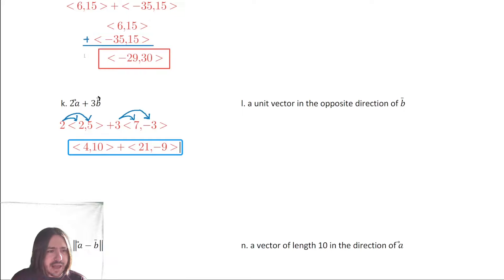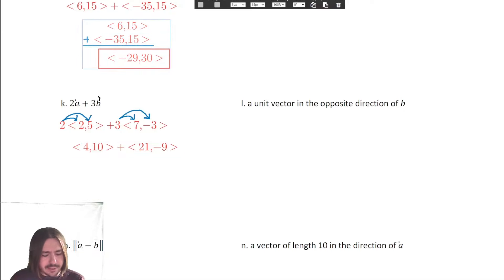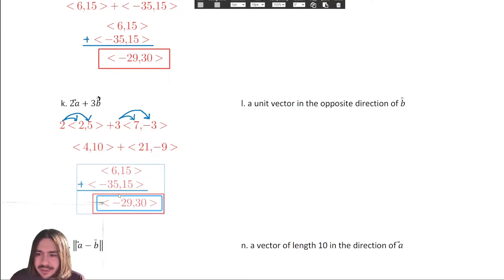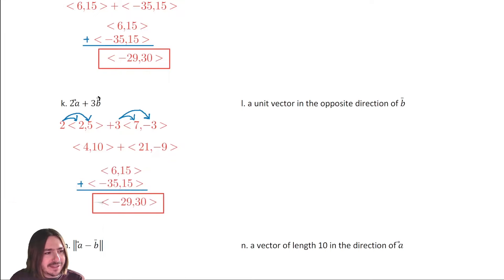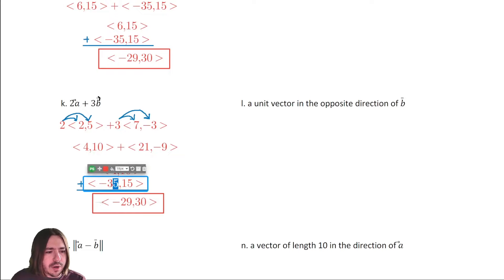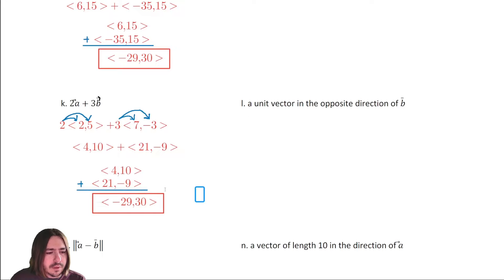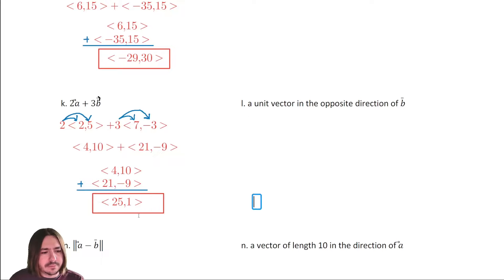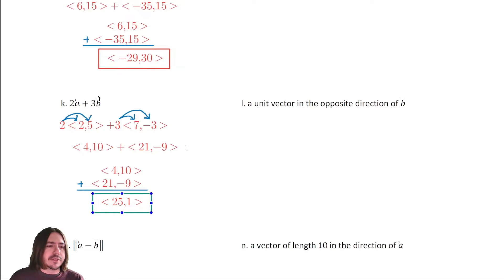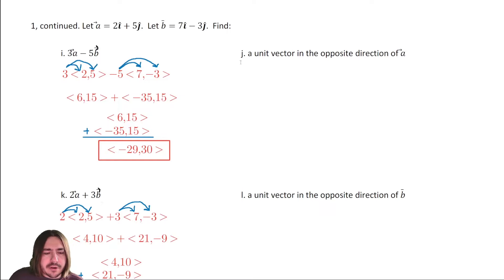Stacking them: four comma ten plus twenty-one comma negative nine. Four plus twenty-one is twenty-five, and ten plus negative nine is one. So two times A plus three times B equals twenty-five comma one.